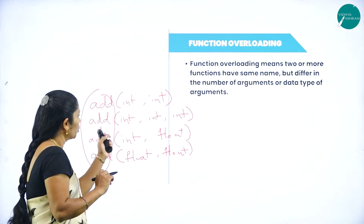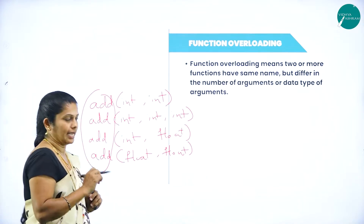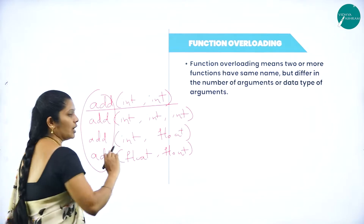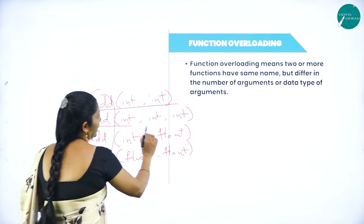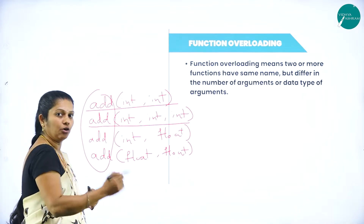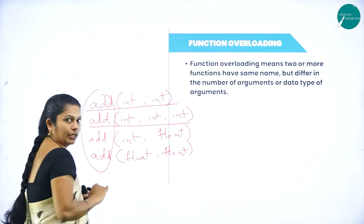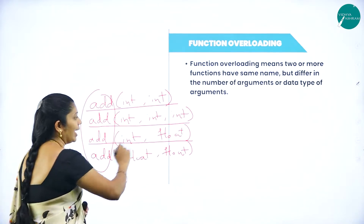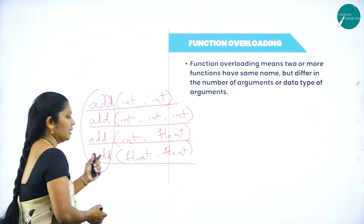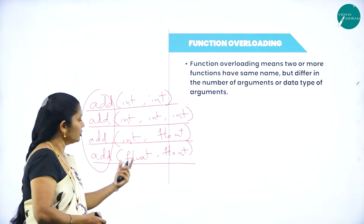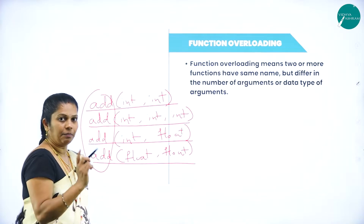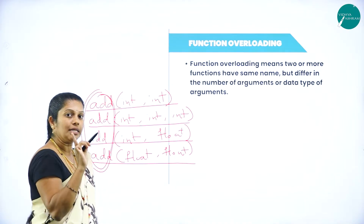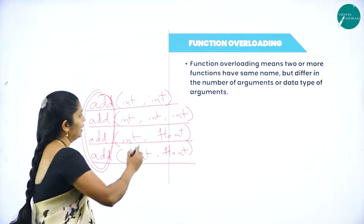If you observe, in all four cases the function name is the same — add. In the first case, the function name is add with two integer arguments. In the second, add with three integer arguments. In the third, add with two arguments where one is int and one is float. In the fourth, add with two float arguments. The function names are the same but differ in number of arguments.